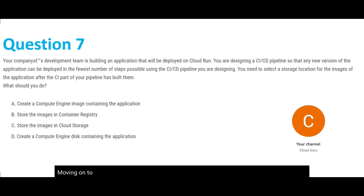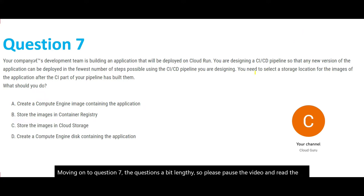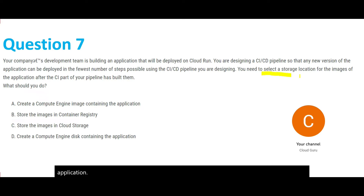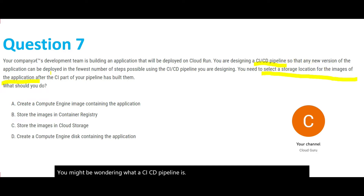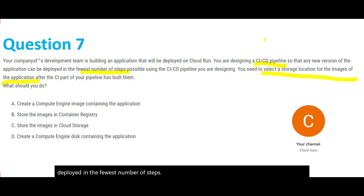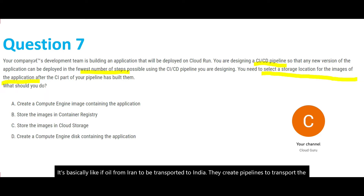Moving on to question 7. The question is a bit lengthy, so please pause the video and read it. The question is basically asking us to select a storage location for the images of the application. The question mentions a CI/CD pipeline. A CI/CD pipeline ensures that any new version of the application can be deployed in the fewest number of steps — like a pipeline transporting oil from one place to another in the most efficient way possible.